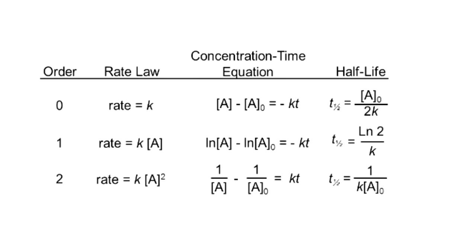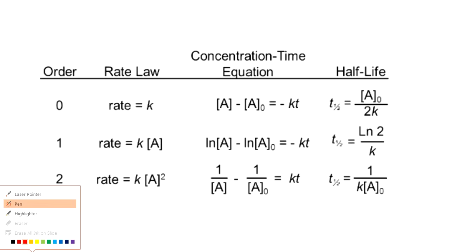For a first-order reaction, the rate equals K times A raised to 1, giving the equation ln(A) minus ln(A-zero) equals minus KT, and T-half equals ln(2) divided by K, or 0.693 divided by K. For a second-order reaction, the rate equals K times A squared, with concentration-time equation 1/A minus 1/A-zero equals KT, and T-half equals 1 divided by K times A-zero.